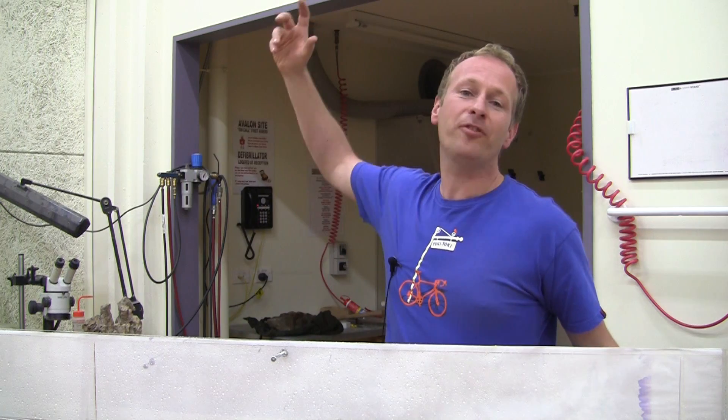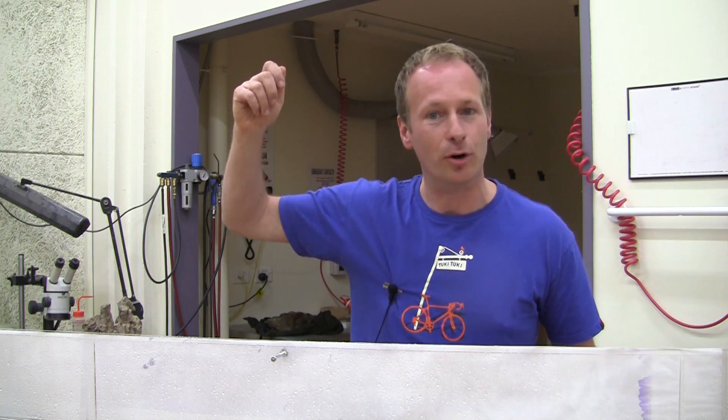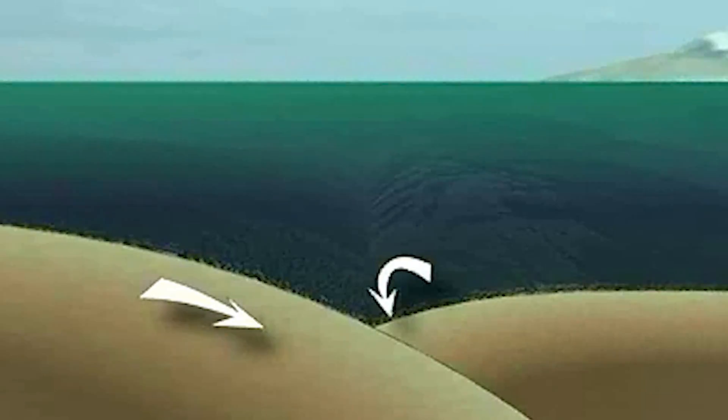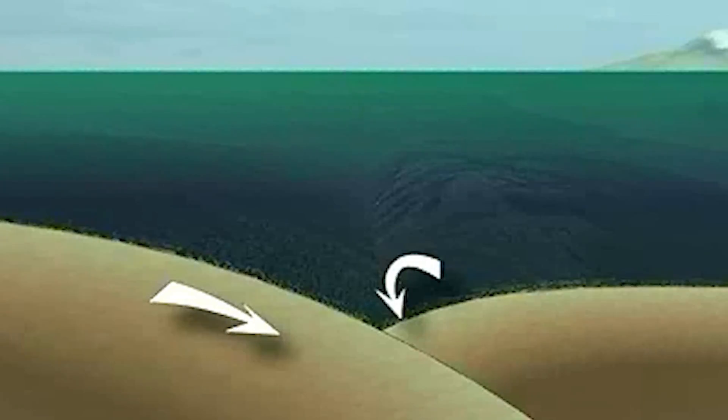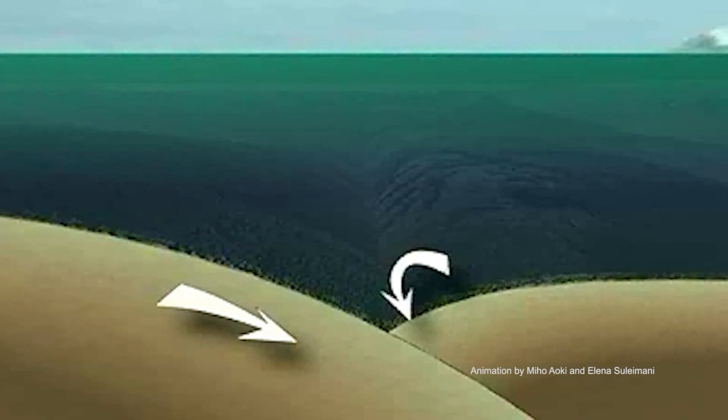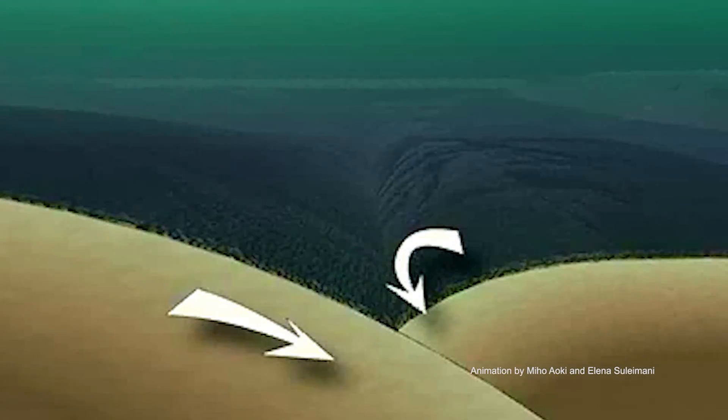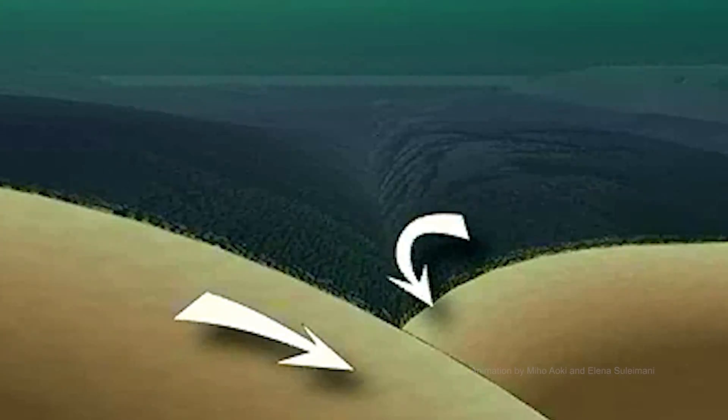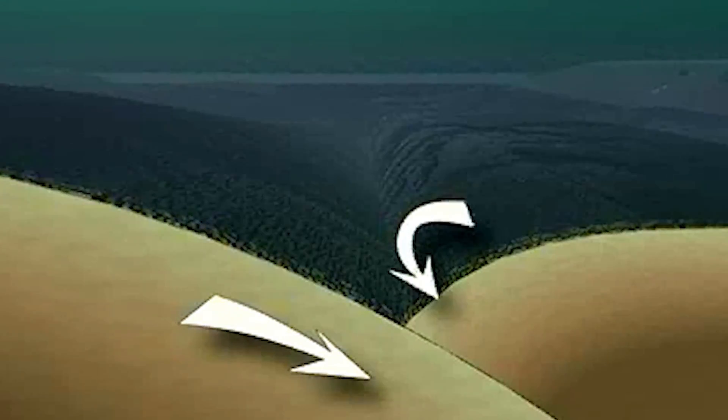A tsunami can occur from an earthquake, from a volcanic eruption, from a landslide, or even from a meteor crashing into the ocean from outer space. In most cases the tsunami is created by the sea floor displacing the water from underneath.